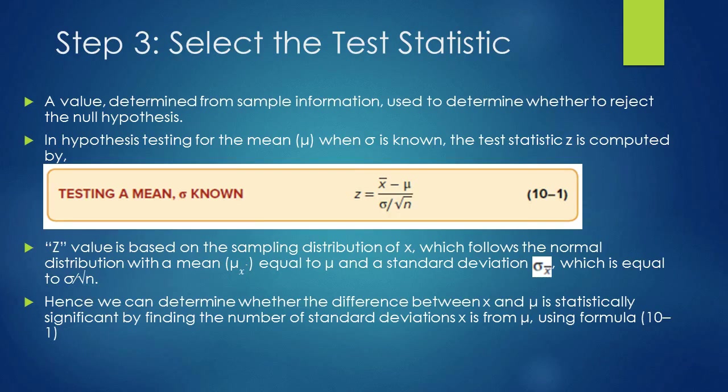In step 3, we compute the value of the test statistic — a value determined from sample information used to determine whether to reject the null hypothesis. In hypothesis testing for the mean mu when sigma is known, the test statistic Z is computed by the formula: Z equals X-bar minus mu, divided by sigma over the square root of n. By substituting the values of X-bar, mu, sigma, and sample size, we calculate the value of Z.